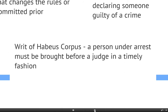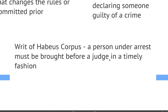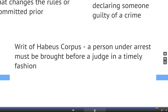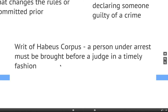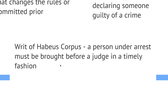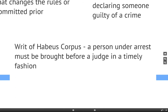Another protection is called the writ of habeas corpus, a Latin term that Congress cannot take away. The writ of habeas corpus means a person under arrest must be brought before a judge in a timely fashion. You can't be put in jail without being told why and just left there forever without a trial. The only time Congress could take this away would be in times of war or national disaster, but not otherwise.